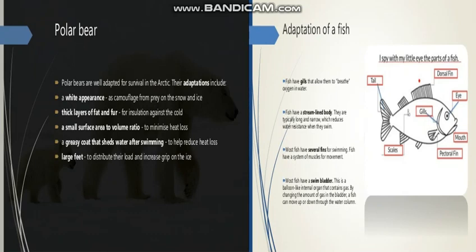The second adaptation is a thick layer of fat and fur, which acts as insulation against the cold. It protects the polar bear from too much cold, and this fur helps maintain their body temperature.